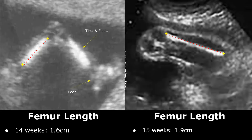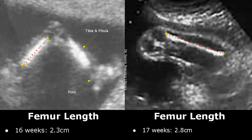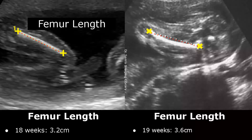In 14 weeks, the femoral length can be around 1.6 cm. At 15 weeks, it will reach 1.9 cm. At 16 weeks, the femoral length can reach 2.3 cm. At 17 weeks, it can reach 2.8 cm. At 18 weeks, the femoral length can reach up to 3.2 cm, and it can reach 3.6 cm by week 19.